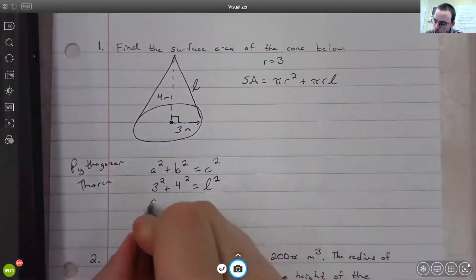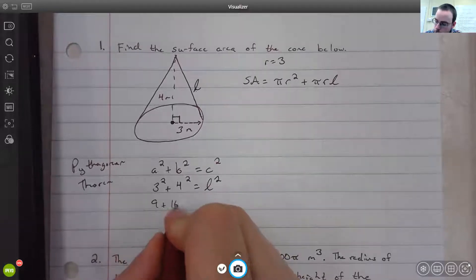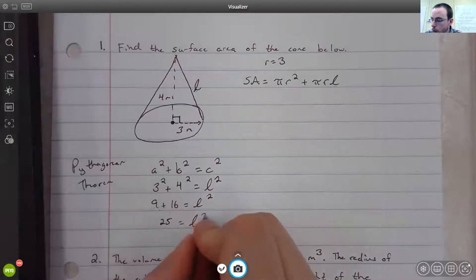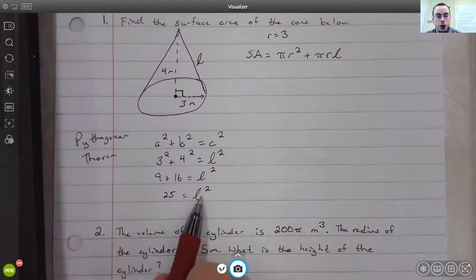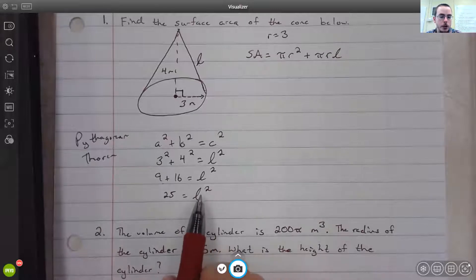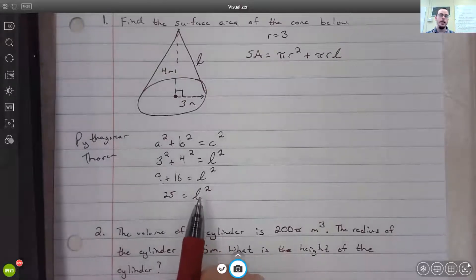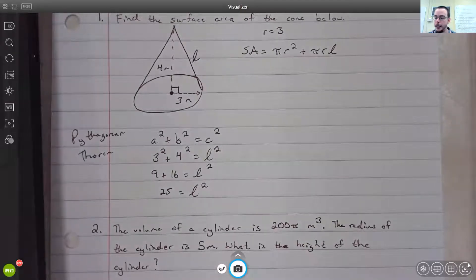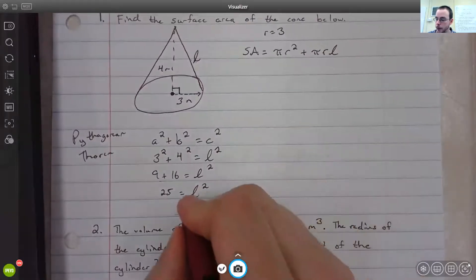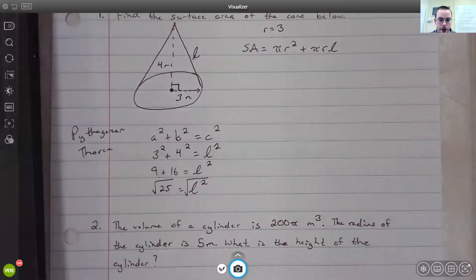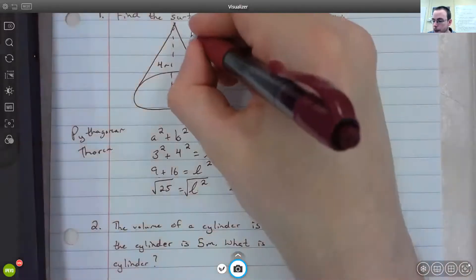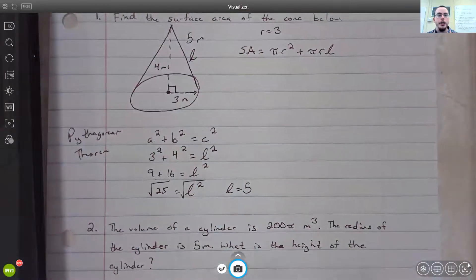3² is 9, 4² is 16. 9 plus 16 is 25 equals l². We're squaring the l, not multiplying it by 2. So in order to find l, we have to do the opposite of squaring a number, which is square rooting. And of course, what you do to one side you do to the other, and you get that l is equal to 5 meters.